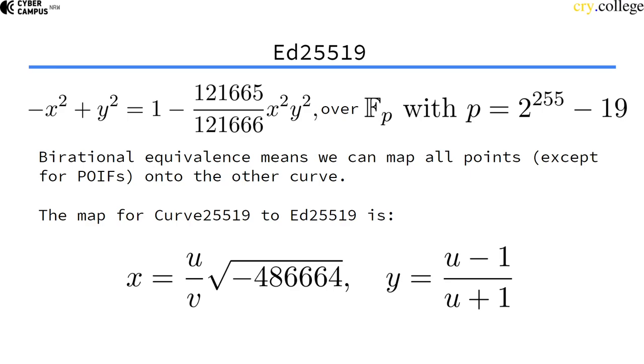So the map for curve 25519 to ED25519: if I want to transfer one point from curve 25519 to ED25519, I can compute the x value like that of the point on ED, and u and v in this case are the x and y values on curve 25519.